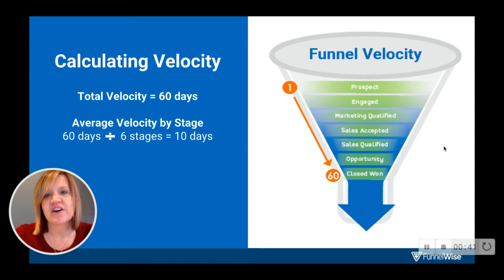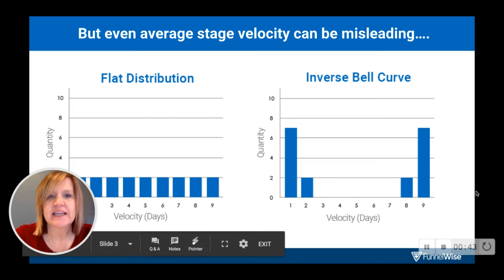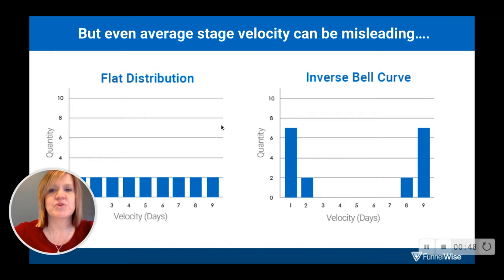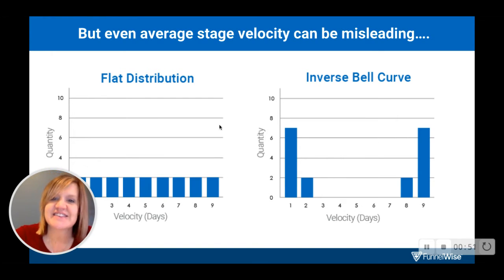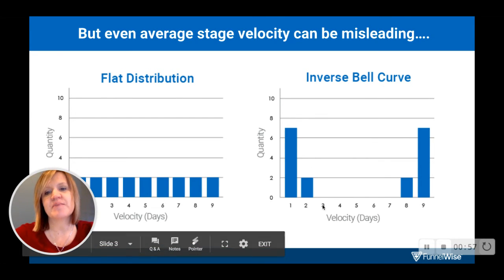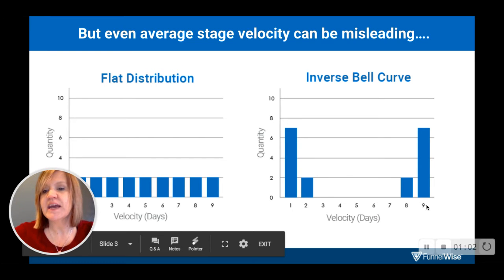However, this can be very misleading. It assumes a flat distribution — that leads move from stage to stage every 10 days — and that's pretty untypical. If you look at it as an inverse bell curve instead, you may have some leads that move in and out very quickly, staying only one or two days, and then a group of leads that stay much longer.